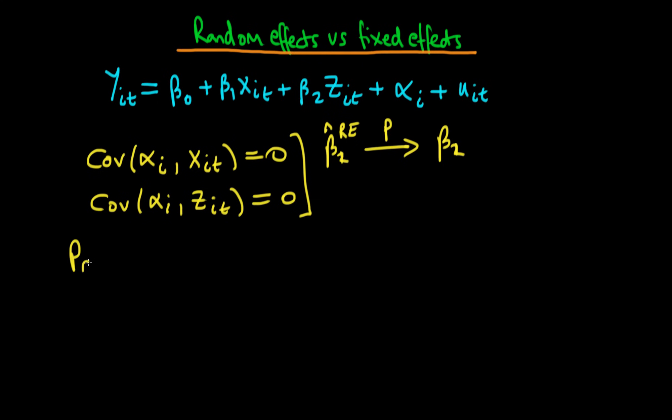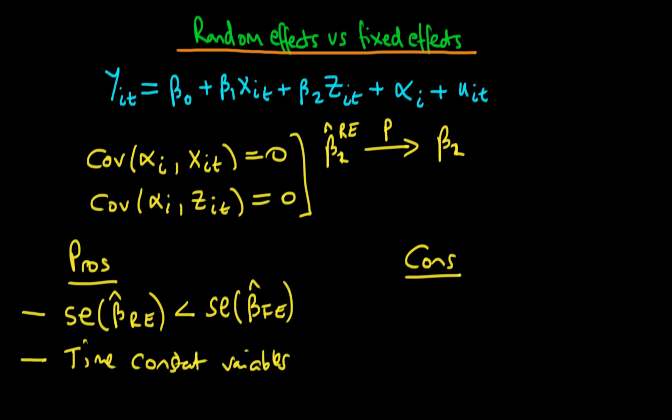So I want to talk about the relative pros and cons of random effects versus fixed effects. One of the pros is that if these two above assumptions are abided by, then it turns out that the standard error of beta hat random effects or the estimated standard error rather will be less than the estimated standard error of beta hat fixed effects. So it is actually a more efficient estimator even though we know that under these two above assumptions being true they are both consistent. Another definite benefit of random effects is that it allows us to estimate the effect of time constant variables on a dependent variable whereas we know for fixed effects that that isn't possible.